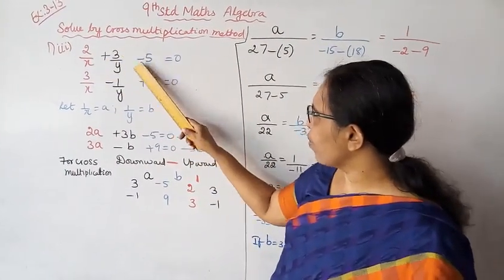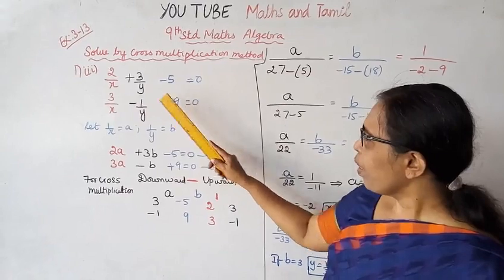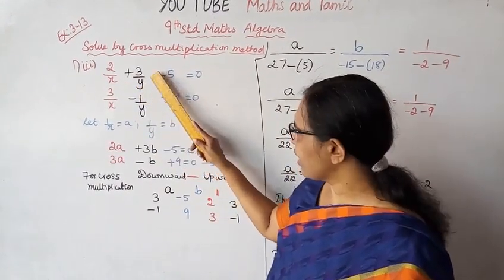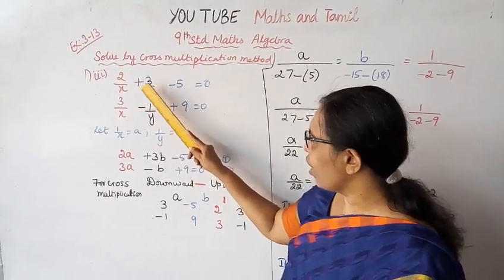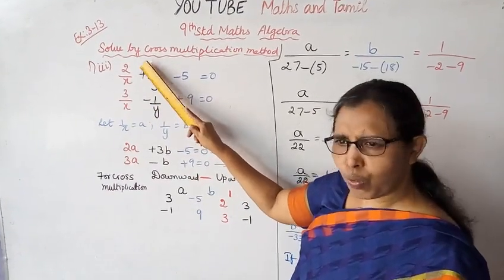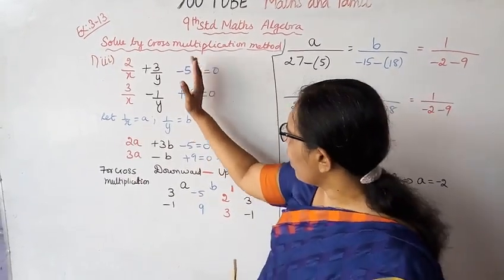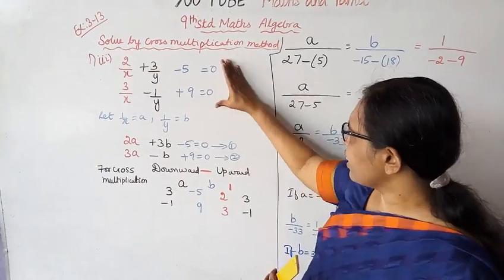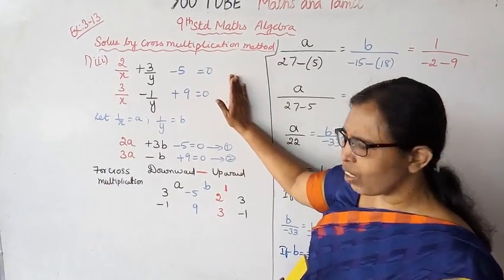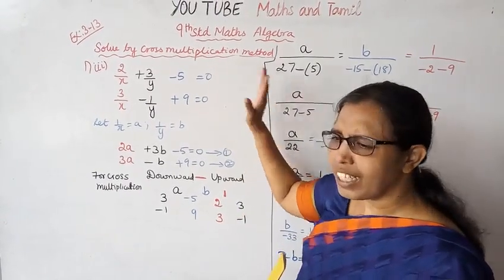The 3rd problem: 2/x plus 3/y minus 5 equal to 0; 3/x minus 1/y plus 9 equal to 0. Here x and y are in the denominator as fractions. We multiply both sides by xy constant, so the left-hand side becomes xy constant and the right-hand side is 0.